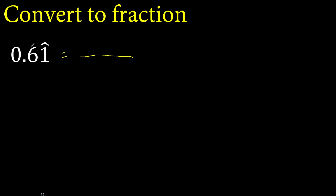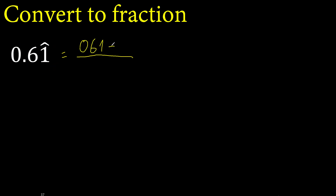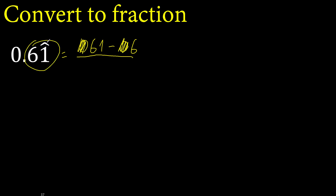First, the number without point or symbol, minus number outside the symbol without point, eliminate 0 on this side. After the point there is one number under the symbol.